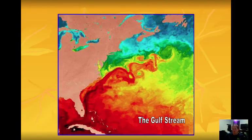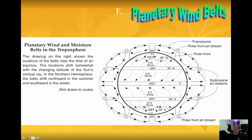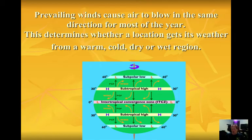Ocean currents: we have cool and warm currents. The Gulf Stream brings warm water up the east coast of North America. Living near a warm current generally warms up the climate; living near a cool current generally cools it down. Wind belts: prevailing winds blow air in generally the same direction over the course of the year, determining whether you're getting colder, warmer, drier, or wetter air — a big determination of what climate region you live in.